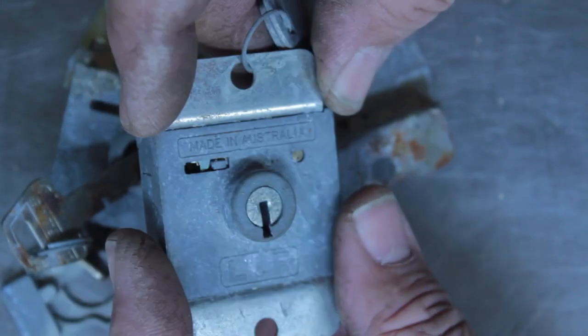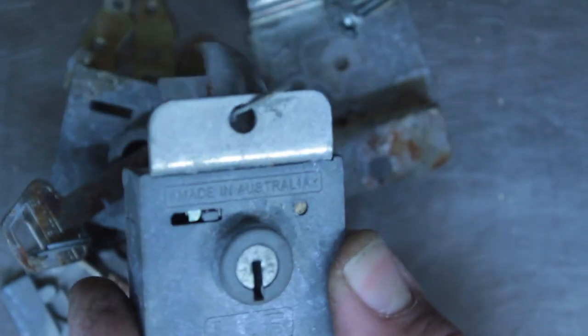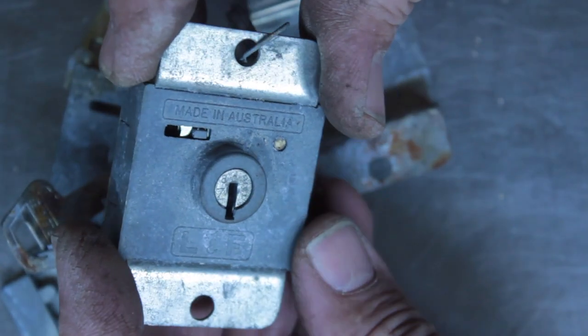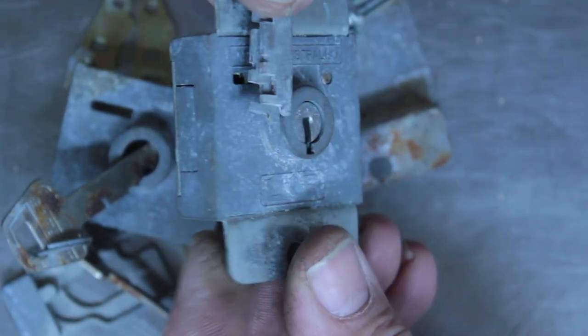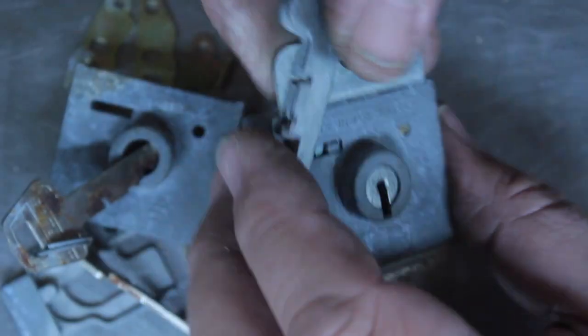So, that's good news at least for us locksmiths. We can look at this and read the code and make a key without having to pull it apart. Or make a key without needing to have one in our truck. Because having one of these in your truck is a rarity. I don't know anybody who does. They're just so old.